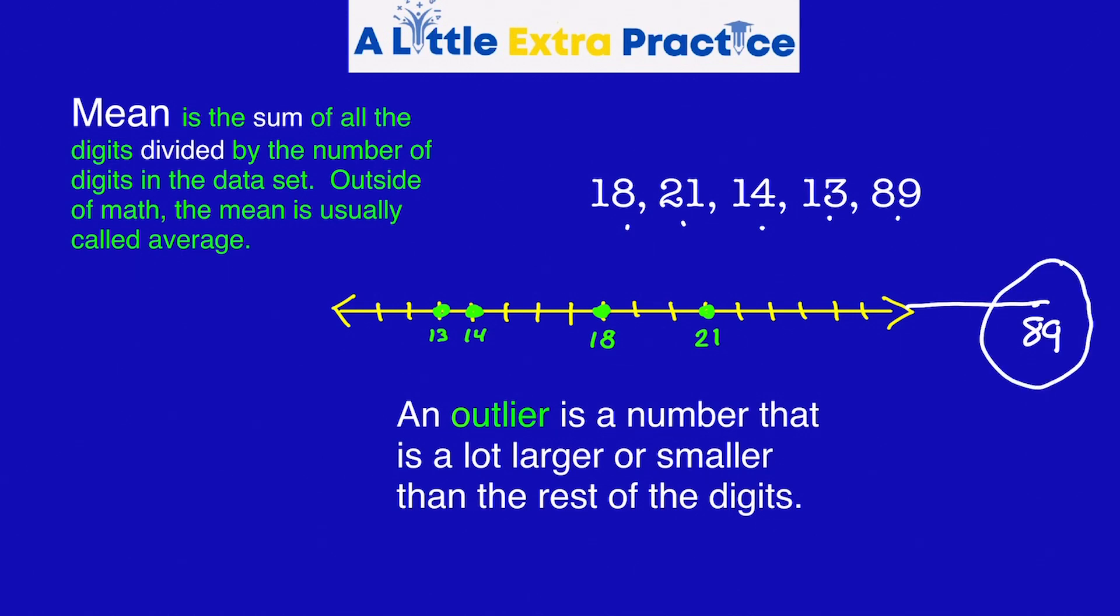What this is called is an outlier. It's a number that is much larger or much smaller than the rest of the numbers. So all these numbers are kind of grouped together within eight. Yet this one is much, much larger than the rest of the numbers. In our case, the average was 31. Well, 31 would also be off the number line and it would be 10 larger than 21.